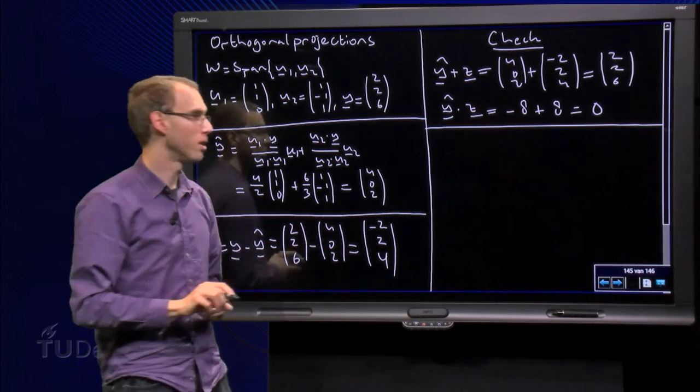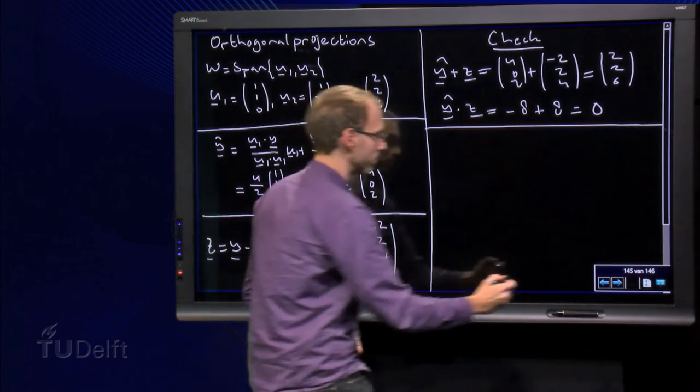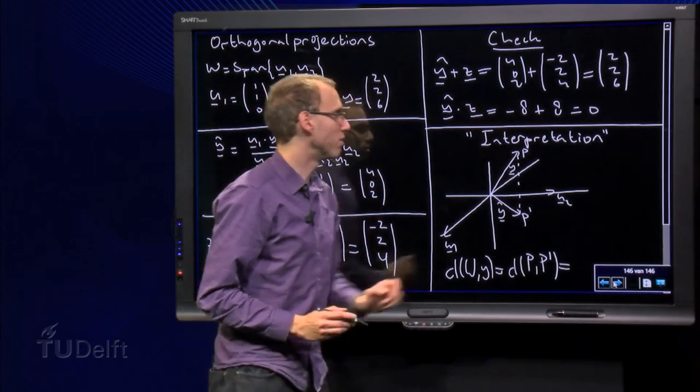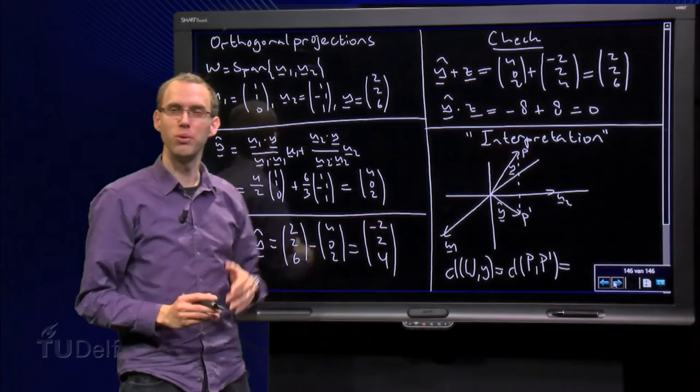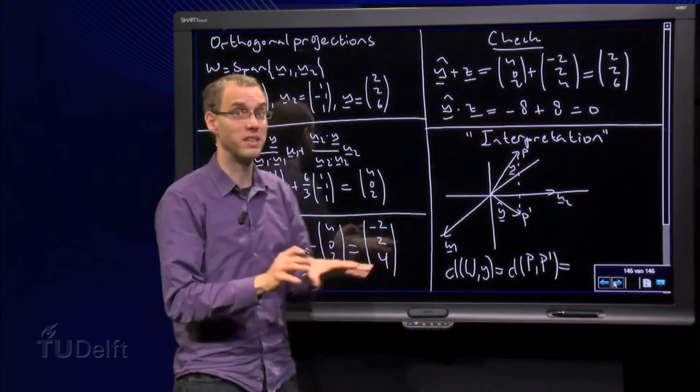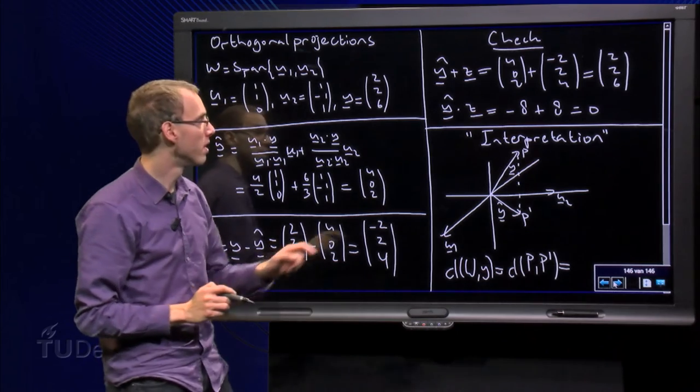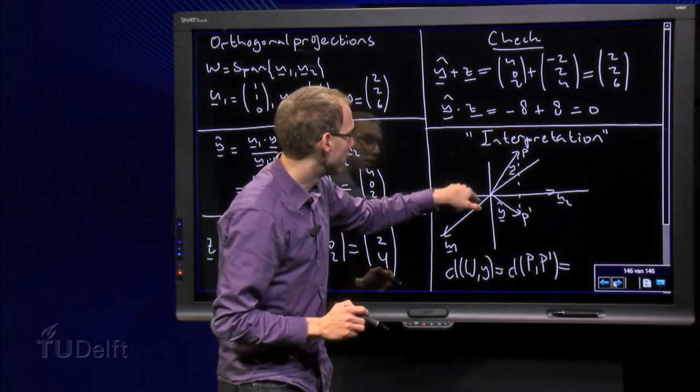How can we use this, for example? What's the interpretation? Well, interpretation in quotes—it's quite hard to draw the plane through u1 and u2 correctly, so I just pretended it was the x-y plane, just to make the sketch a bit easier.